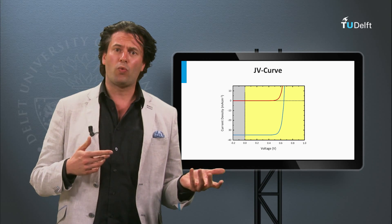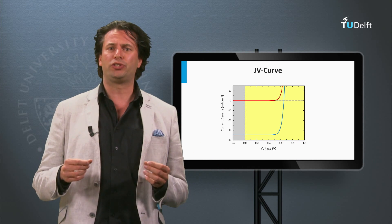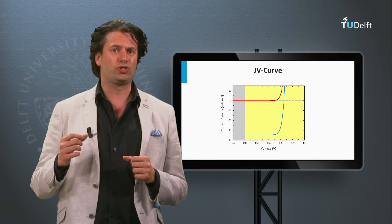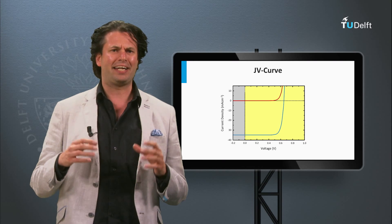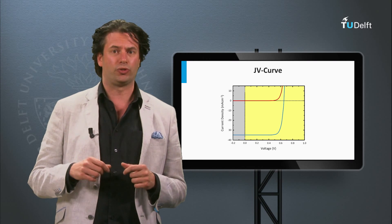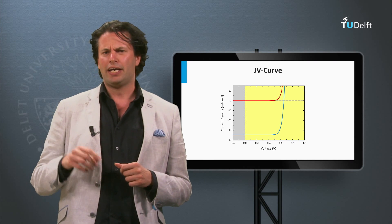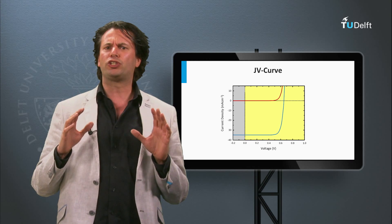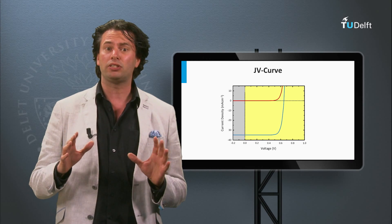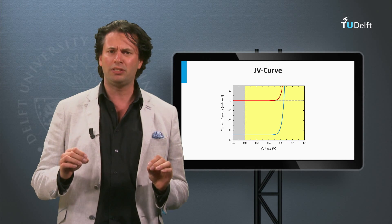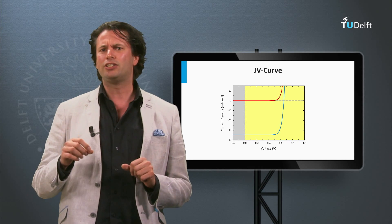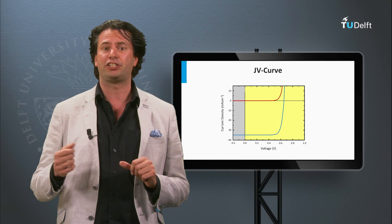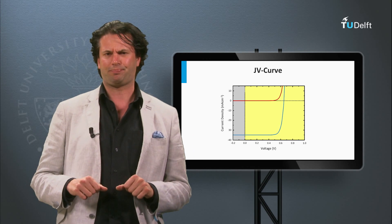How can we determine the performance of a solar cell? In the previous block we have introduced the JV curve of an ideal solar cell and its corresponding electrical circuit. In this block we are going to discuss the external parameters that determine the light-to-electricity conversion efficiency of an ideal solar cell.